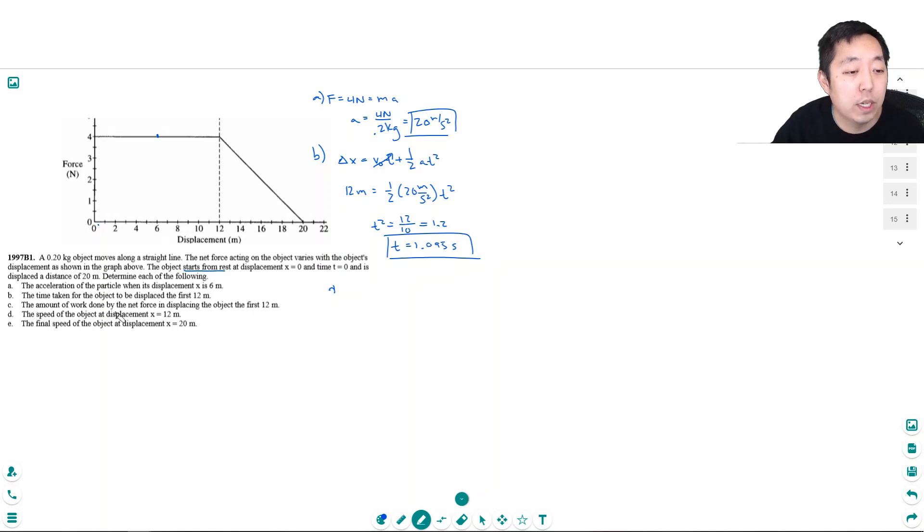C, the amount of work done by the net force displacing the object the first 12 meters. Okay, force work. Work is force times distance. It's applying a constant force times the distance of 12 meters. So it's 4 newtons times 12 meters. It's equal to 48 joules.